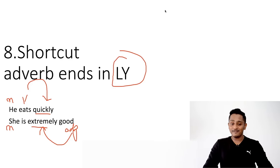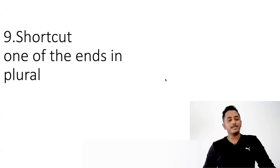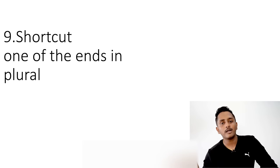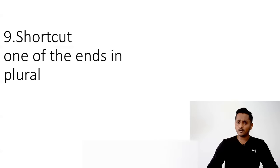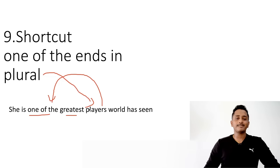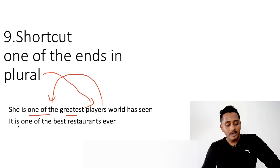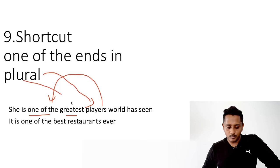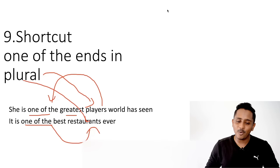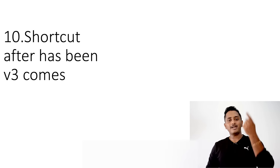Shortcut number nine — most important: 'one of the' is always followed by a plural noun. 'One of the hotels,' 'one of the boys,' 'one of the cities,' 'one of the best restaurants.' Never singular. 'She is one of the greatest players' — 'player' is wrong, 'players' is correct. One of the = one among many, so plural always follows.